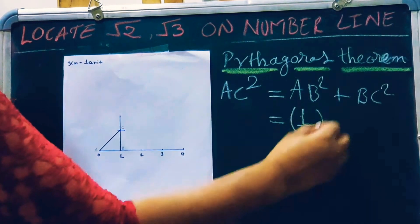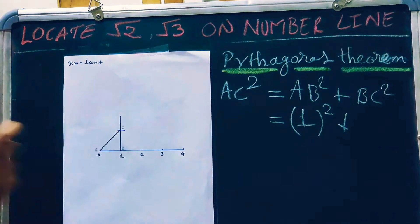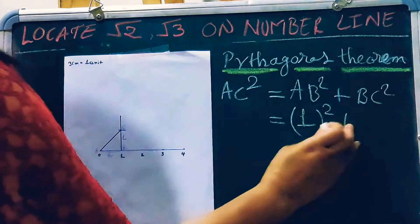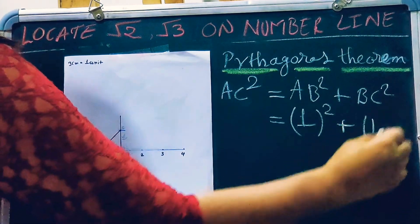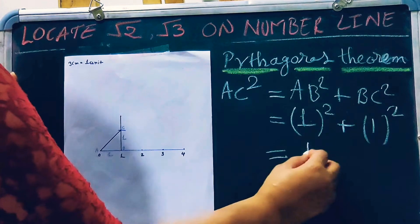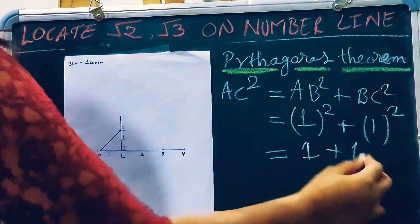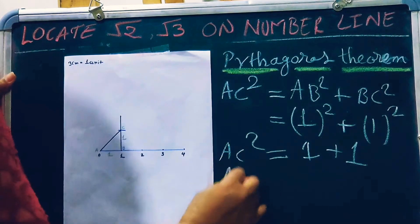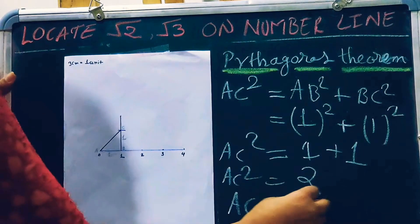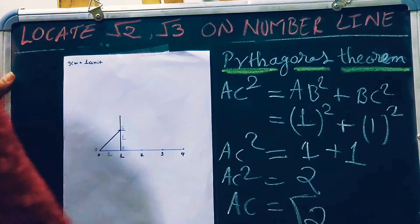BC is also equal to 1 unit. So 1 square plus 1 square means 1 plus 1. AC square is equal to 2, and now AC is equal to root 2. So here AC is equal to root 2.